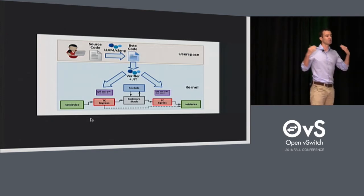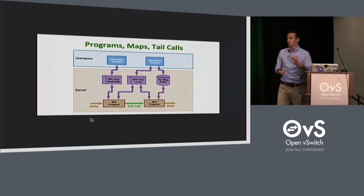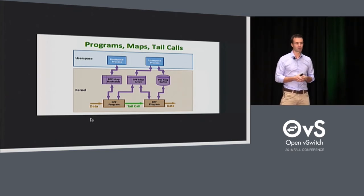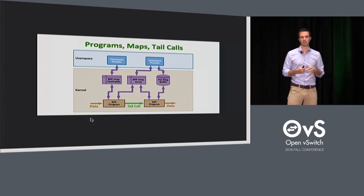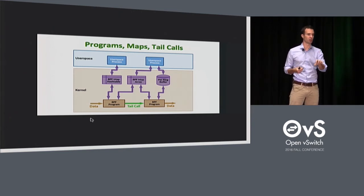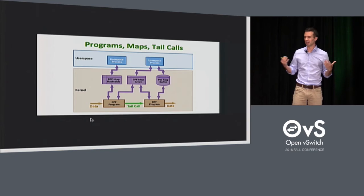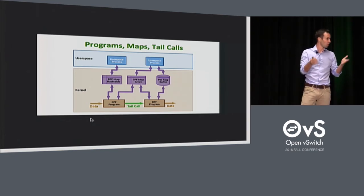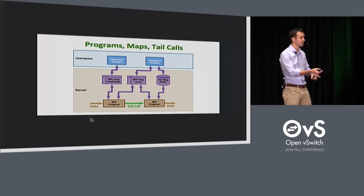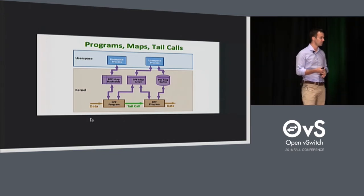BPF doesn't include bytecode only — there's additional functionality that comes along with it. The most important is maps. In BPF, state and code are separate: bytecode is the code, and all your state is in maps. Maps are basically memory regions that can be global or per-CPU, and they can be of multiple data types: hash tables, arrays, stack traces for perf tracing purposes, and so on.